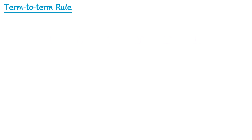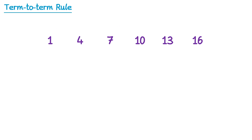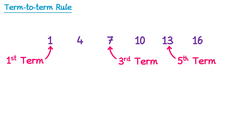In maths, if we have a list of numbers that follows a particular rule or pattern, then we can call it a sequence. The numbers within the sequence are known as terms, so this number 1 here is the first term of the sequence, this number 7 here is the third term of this sequence, and this 13 here is the fifth term of the sequence.